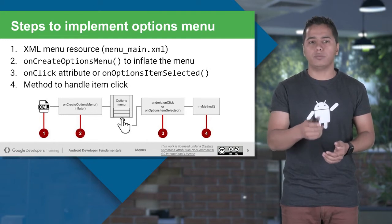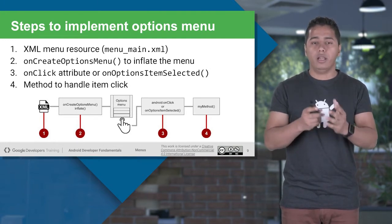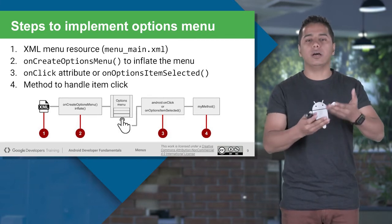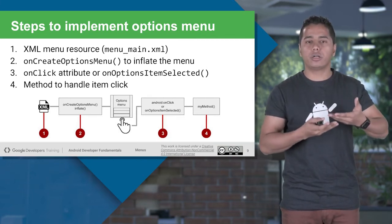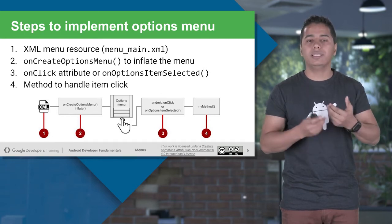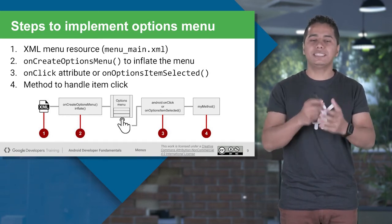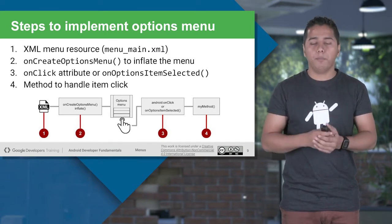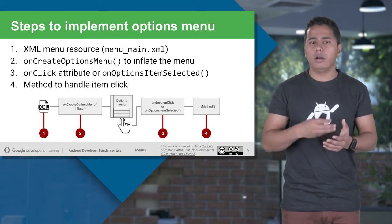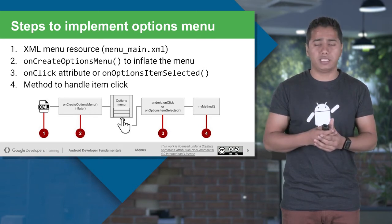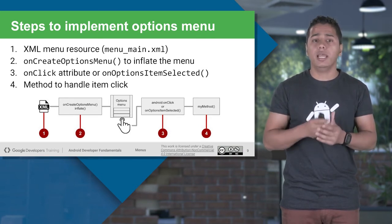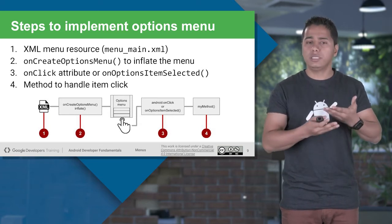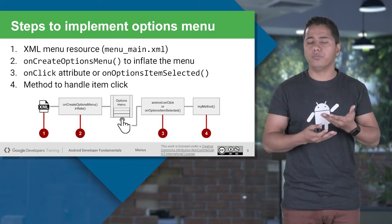How do we add the option menu? To add an option menu, the very first thing you need is to create a folder inside your resource or res folder — that is the menu folder. Inside that menu folder, you need to create an XML file, such as menu_main.xml or my_menu.xml. Inside that XML file, you will create your menu.